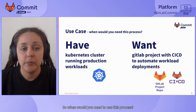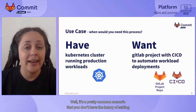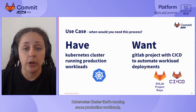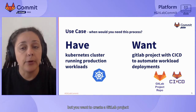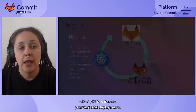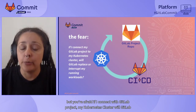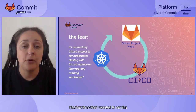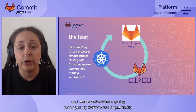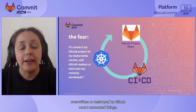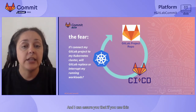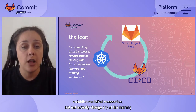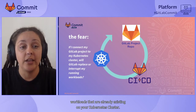So when would you need to use this process? It's a pretty common scenario that you don't have the luxury of setting everything up from scratch. If you already have an existing Kubernetes cluster running some production workloads but you want to create a GitLab project with CI/CD to automate your workload deployments, you might be afraid that GitLab will replace or interrupt your running workloads. I can assure you that if you use this process, you can establish the initial connection without actually changing any of the running workloads already existing on your Kubernetes cluster.